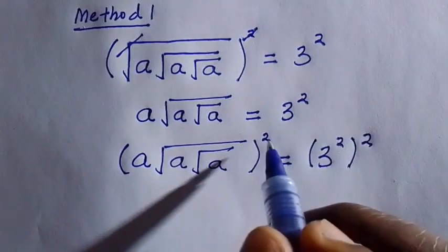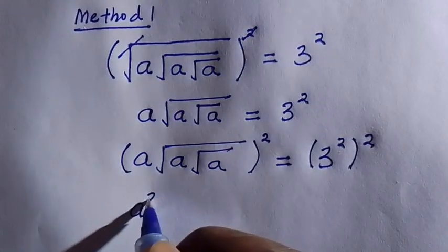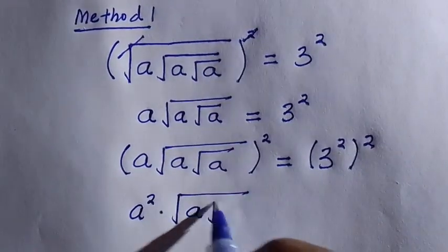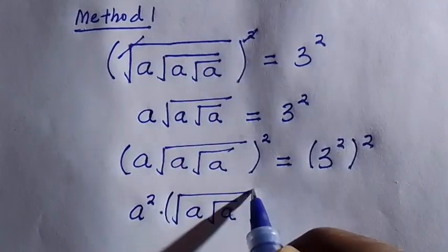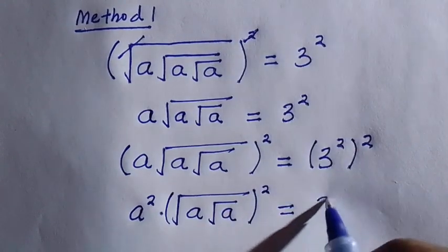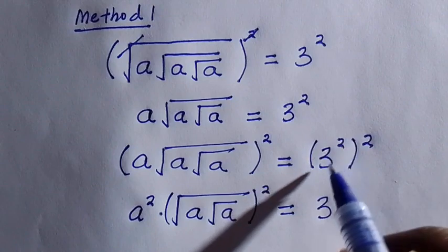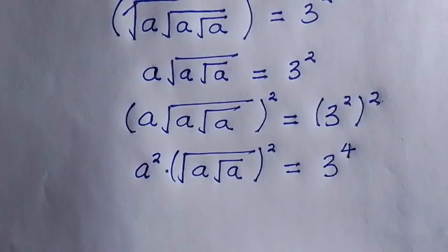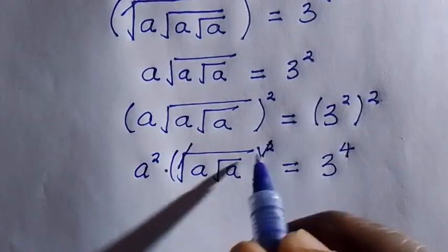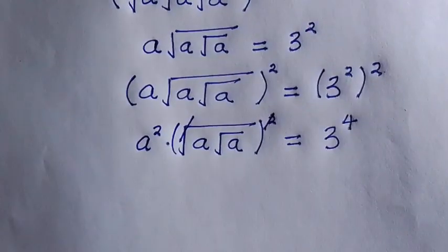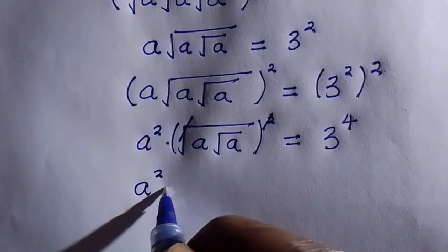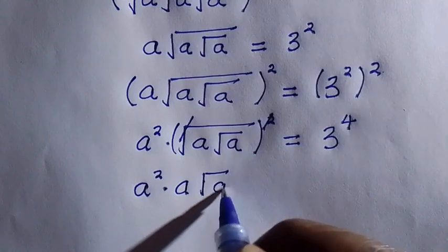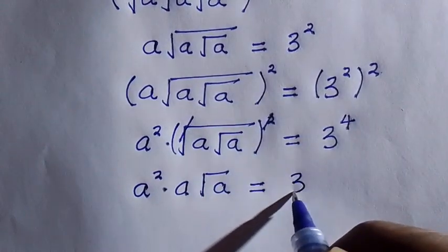So when this a is squared, we take the square of the whole expression — root a multiplied by root a raised to the power of 2 equals 3 to the power of 4. This square and the square root cancel, giving us a squared multiplied by a, while this one remains root a equals 3 to the power of 4.